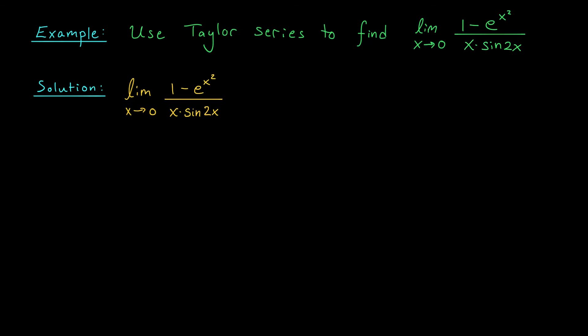For our last example, I'd like to use Taylor series to compute this limit. The limit as x goes to zero of one minus e to the x squared divided by x sine two x. Just like the limits in our previous examples, we could use L'Hopital's rule here, but we would have to use it twice and it would require multiple applications of both the product and chain rules. Not too much fun. Instead, we'll try Taylor series. So I'm going to start by finding the Maclaurin series for e to the x squared and sine two x. Hopefully, when I plug these into my limit, some cancellation will occur.